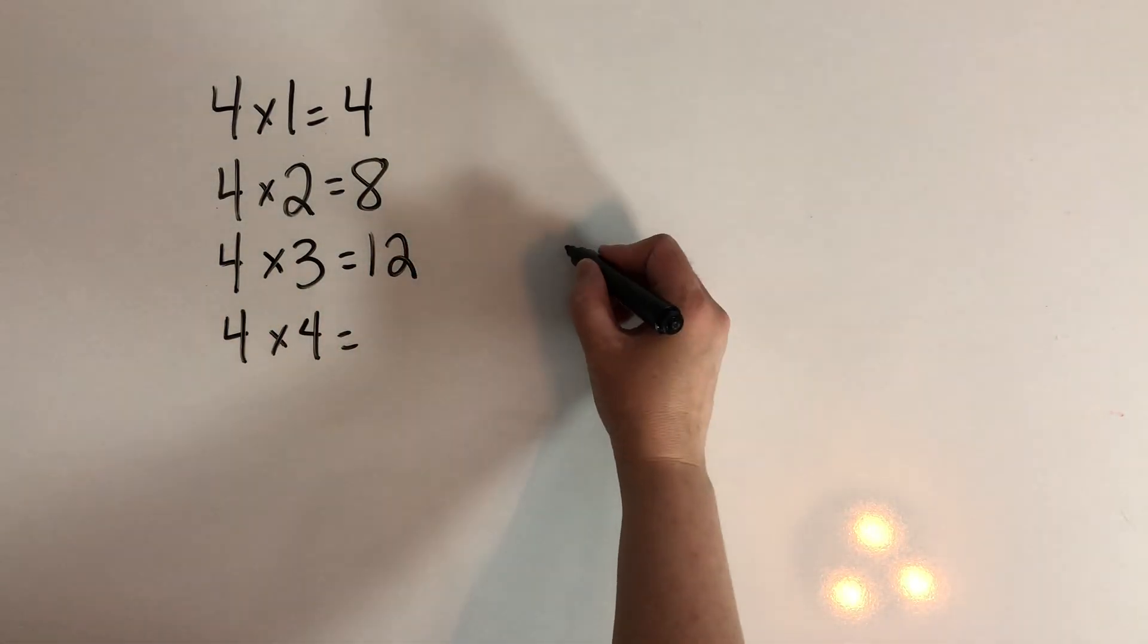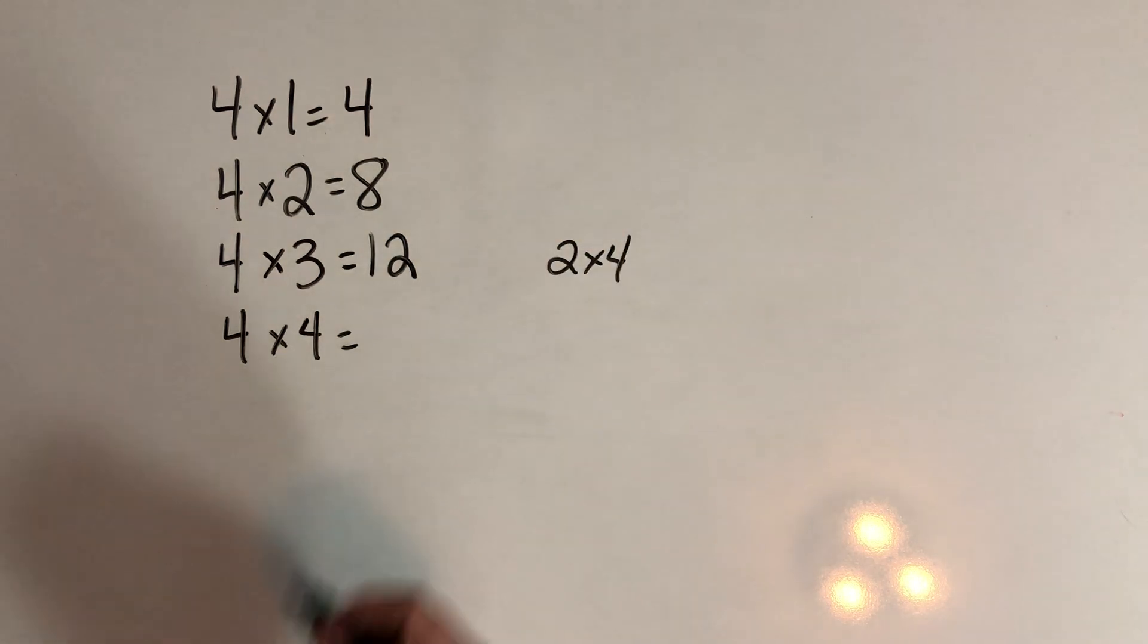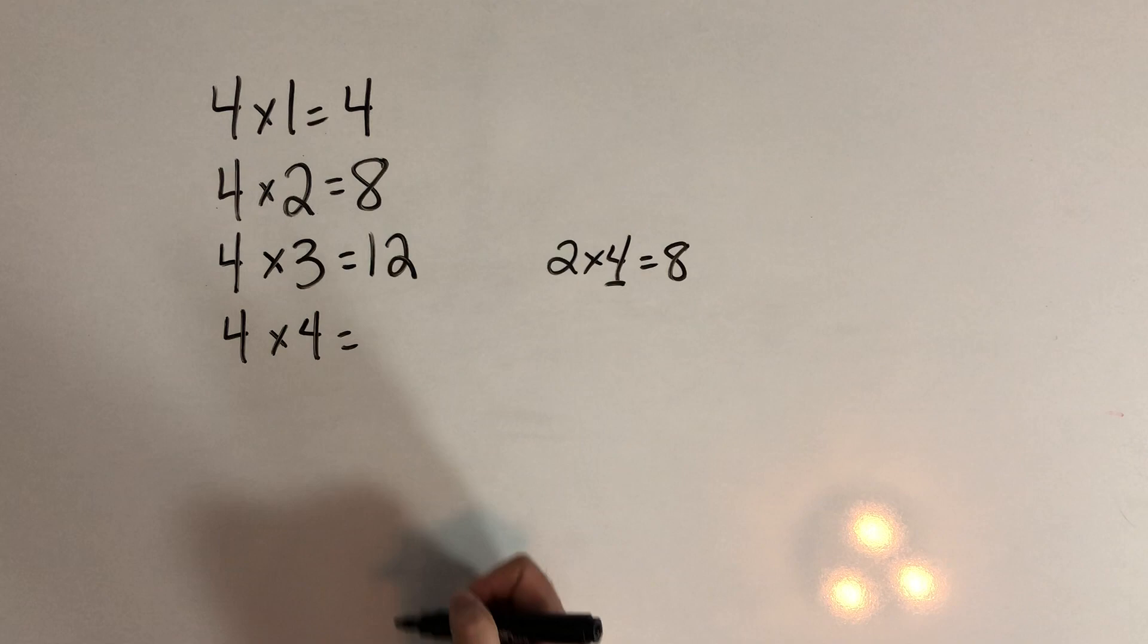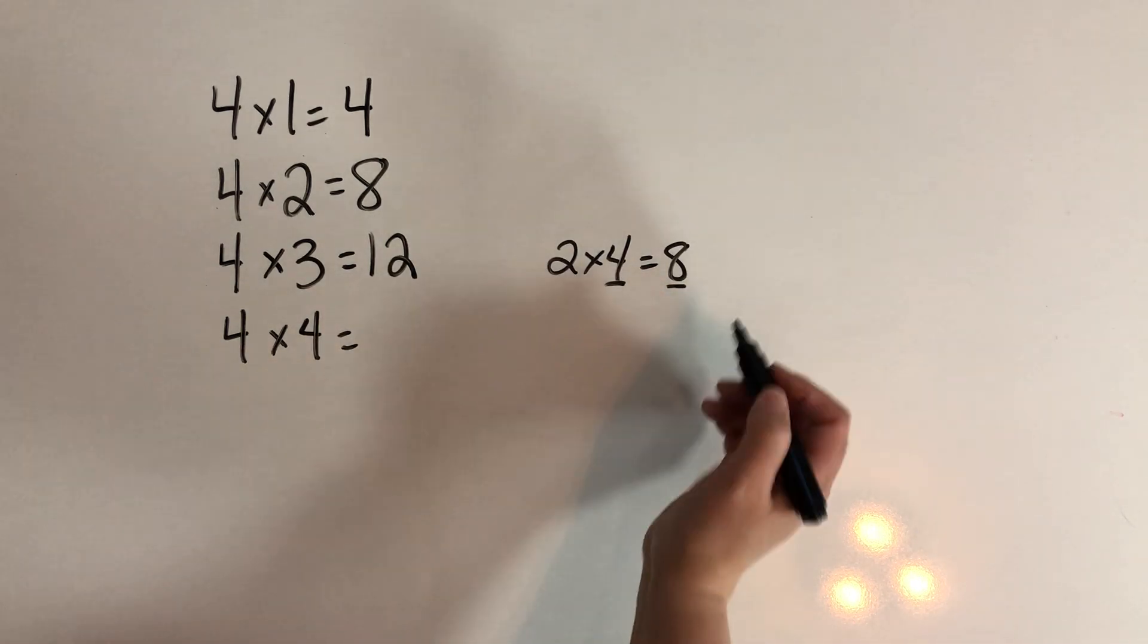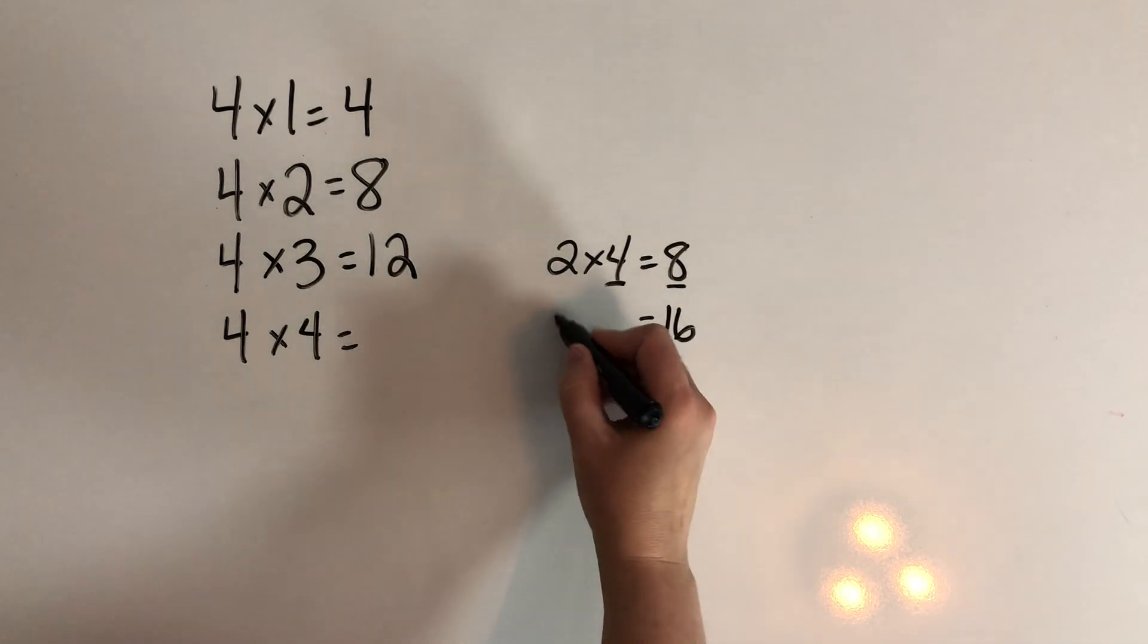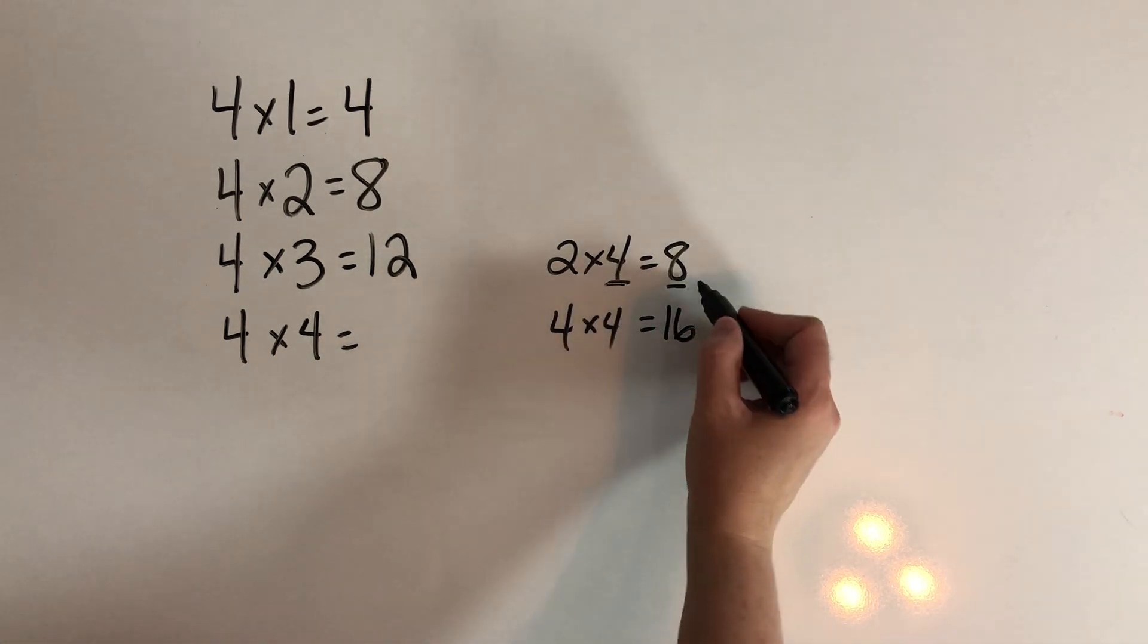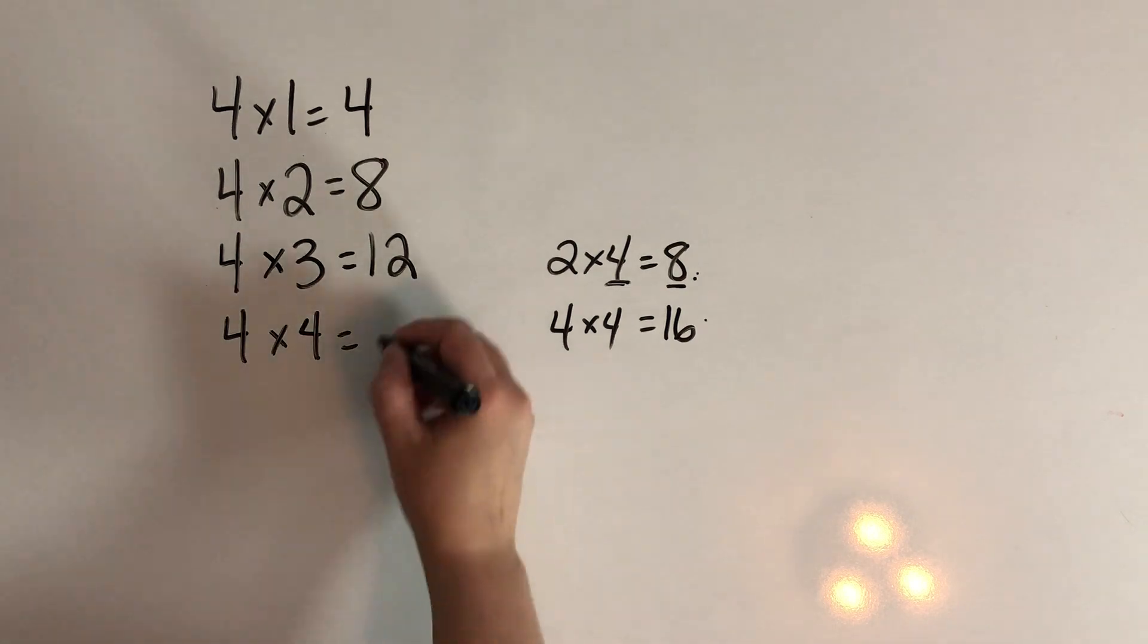For four times four, let's start in our heads with two times four. So the double of four, and that makes eight, and now the double of eight is going to be sixteen. So that's four times four. We double the four to make eight, double the eight to make sixteen.